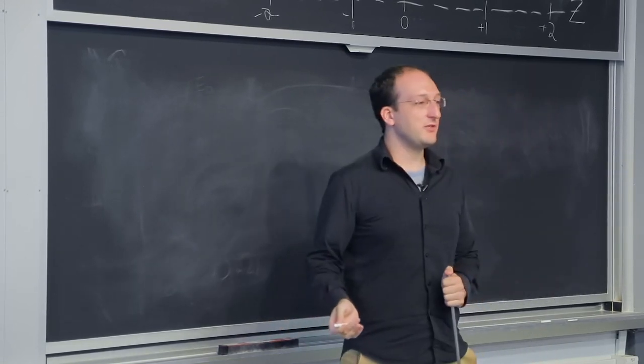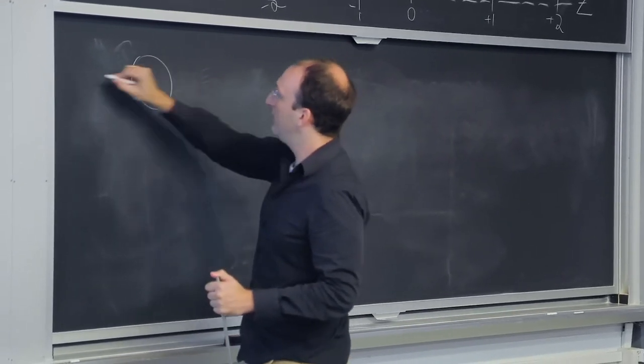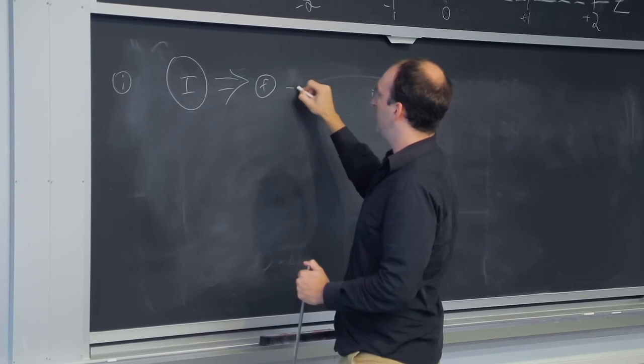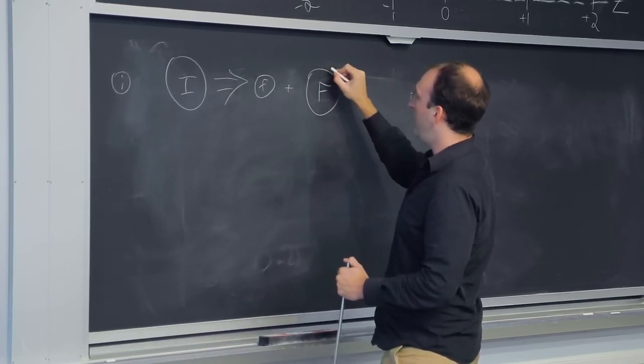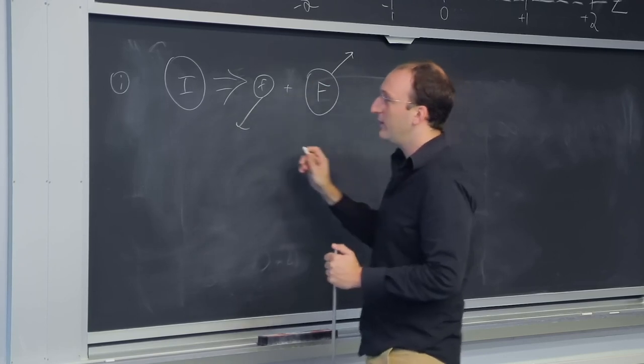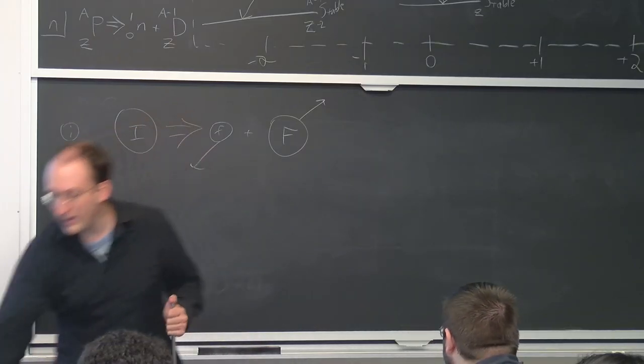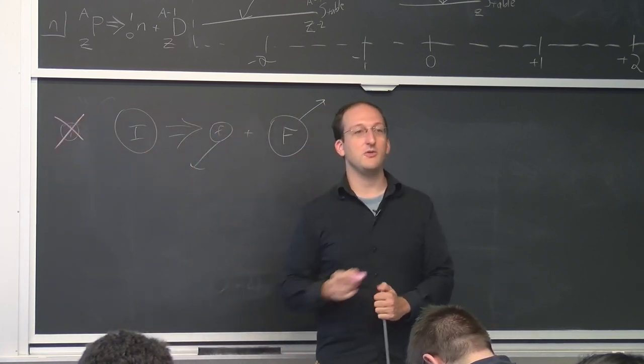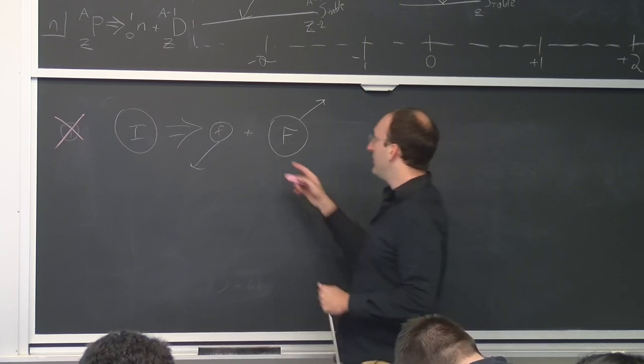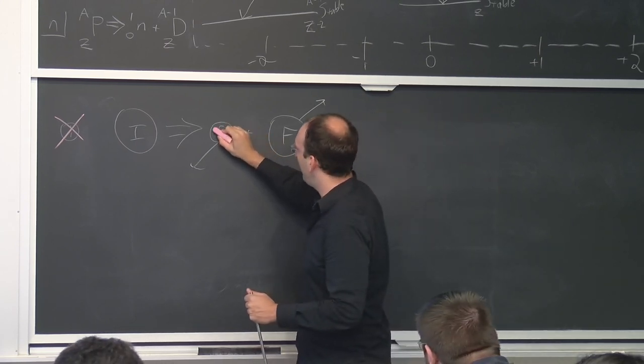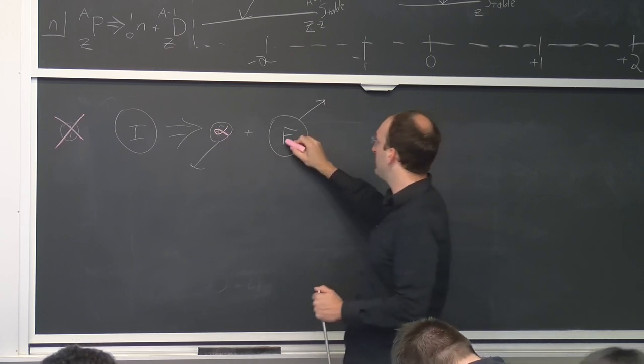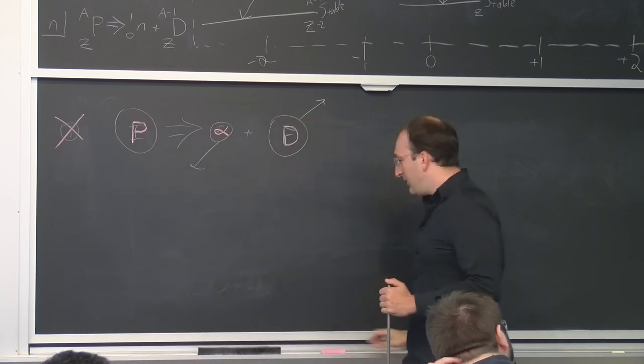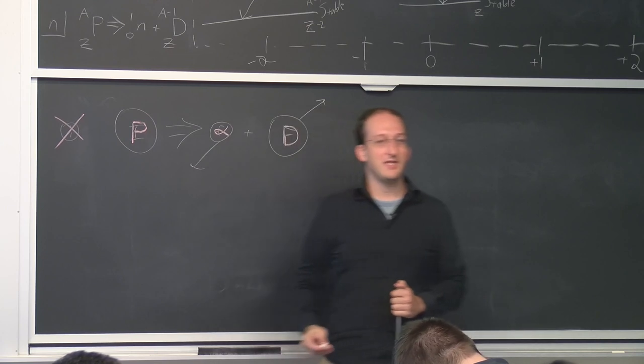Then you might also ask, why is it that the highest energy alpha ray is not the same energy as the q value? So for this, it's a greatly simplified application of the q equation that we learned last time. What are the two equations that we need to conserve?